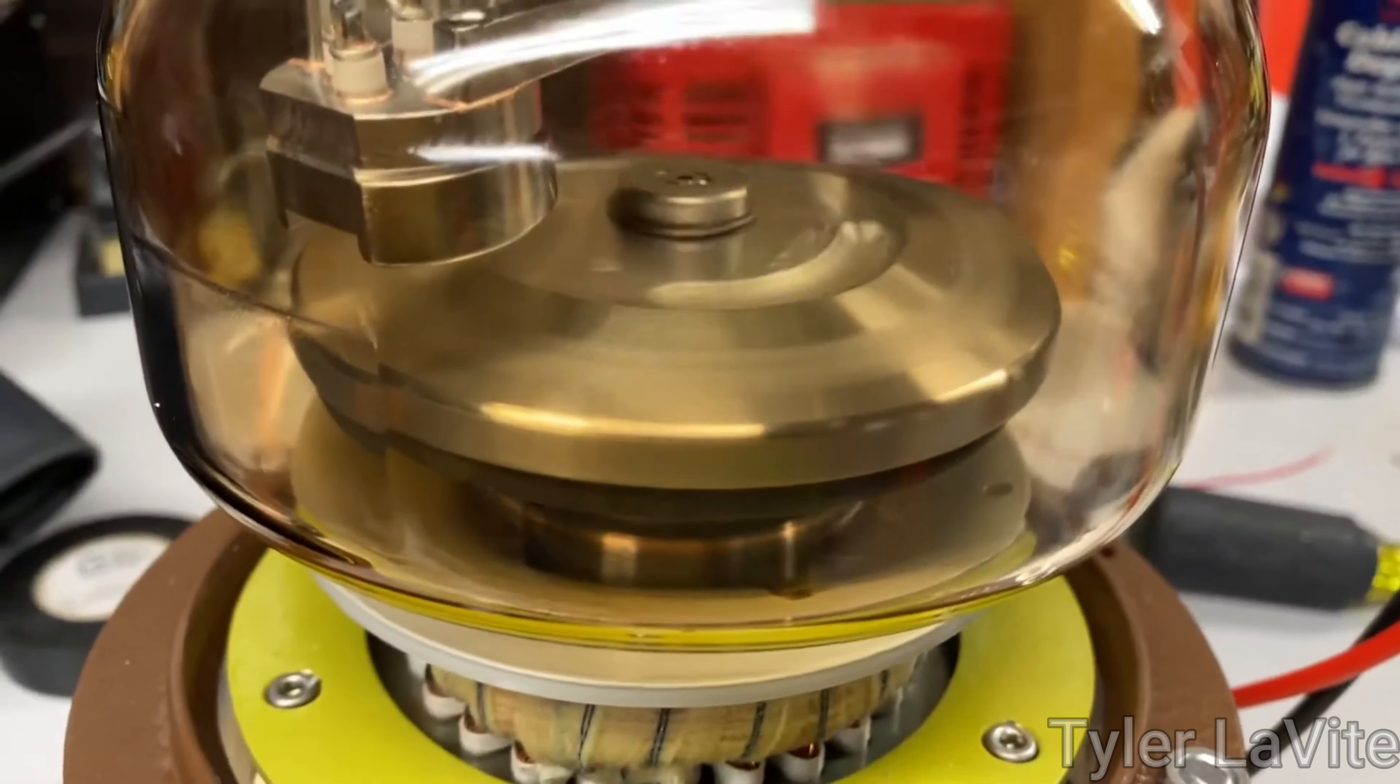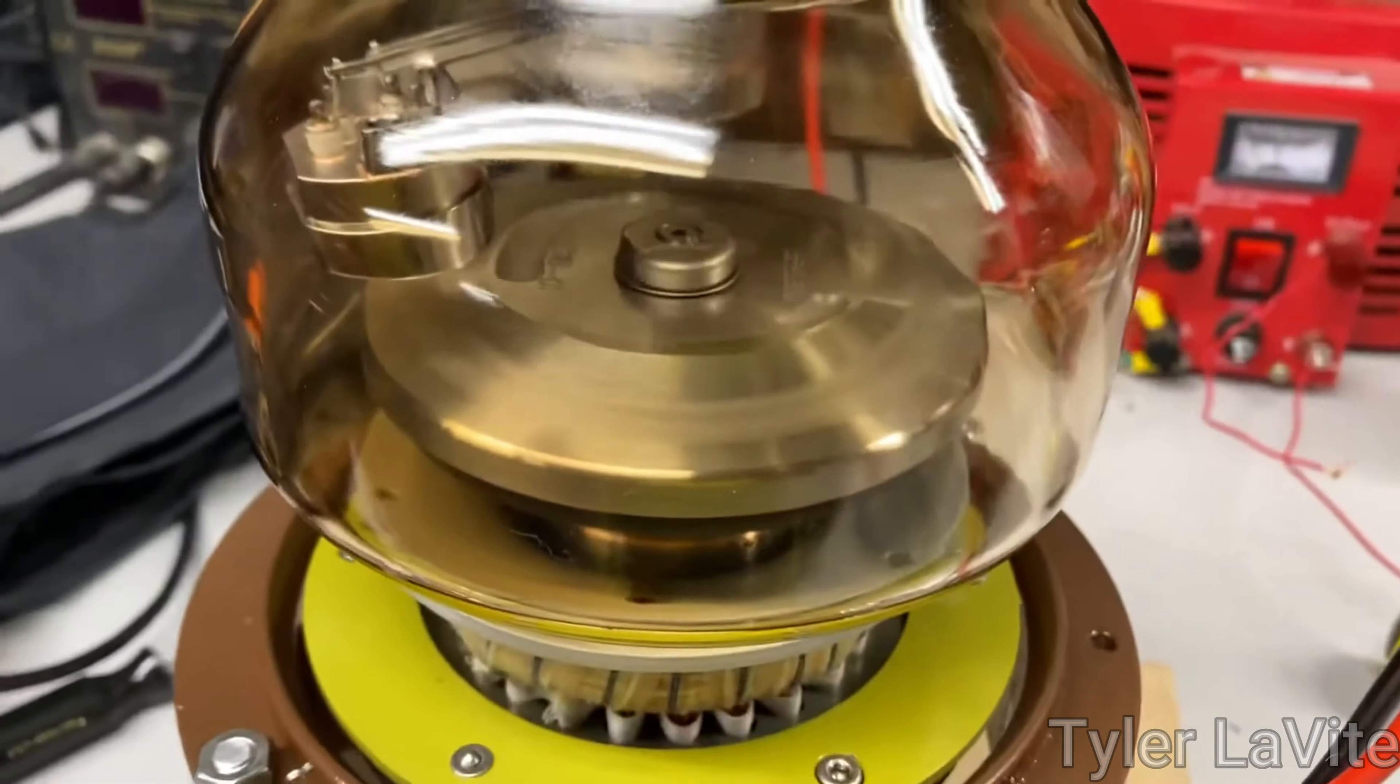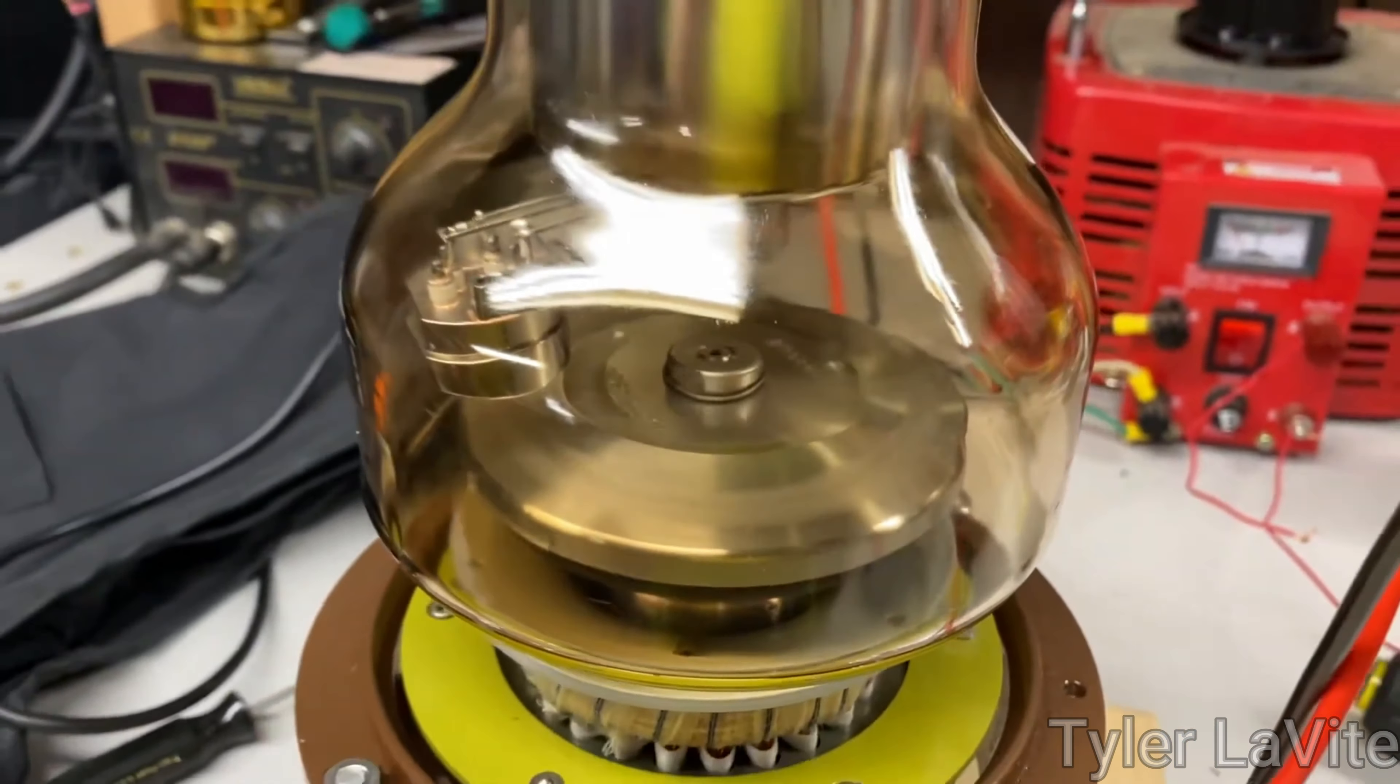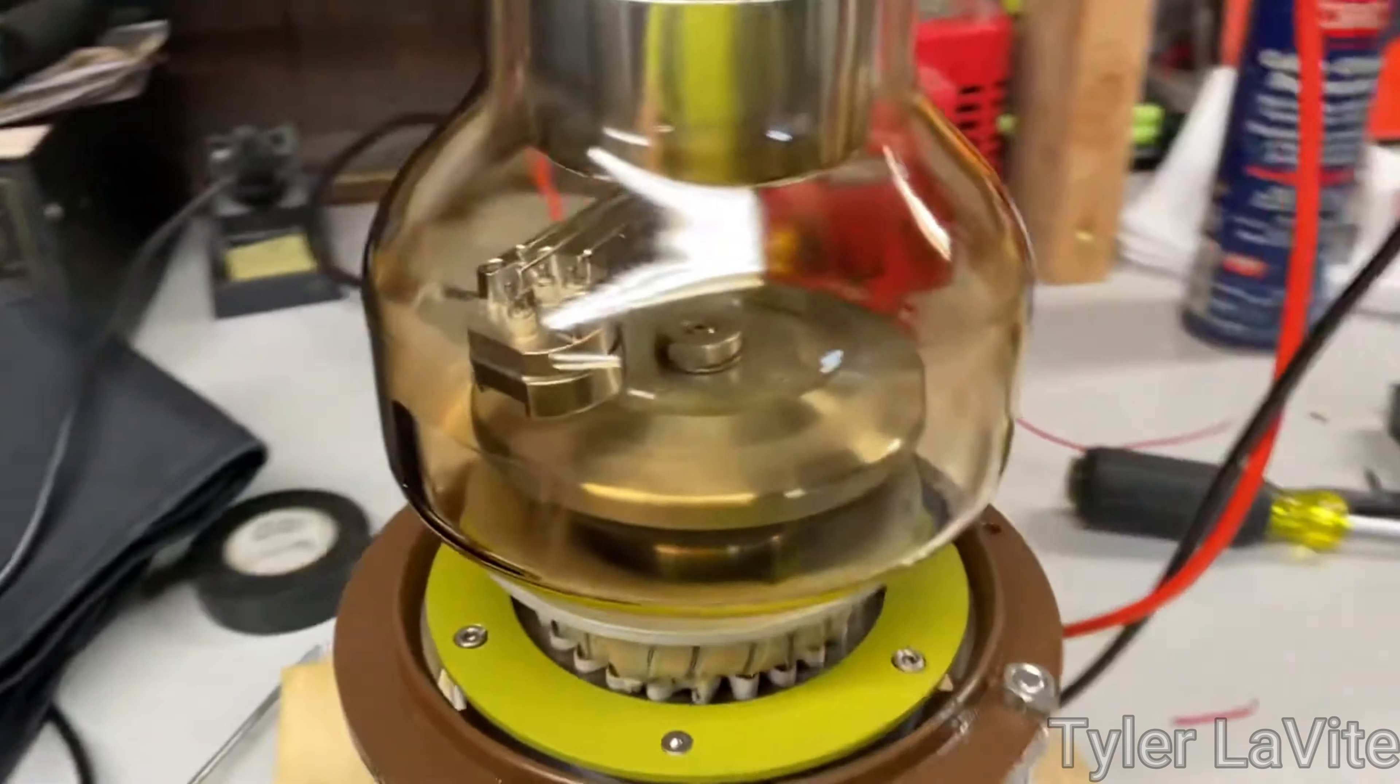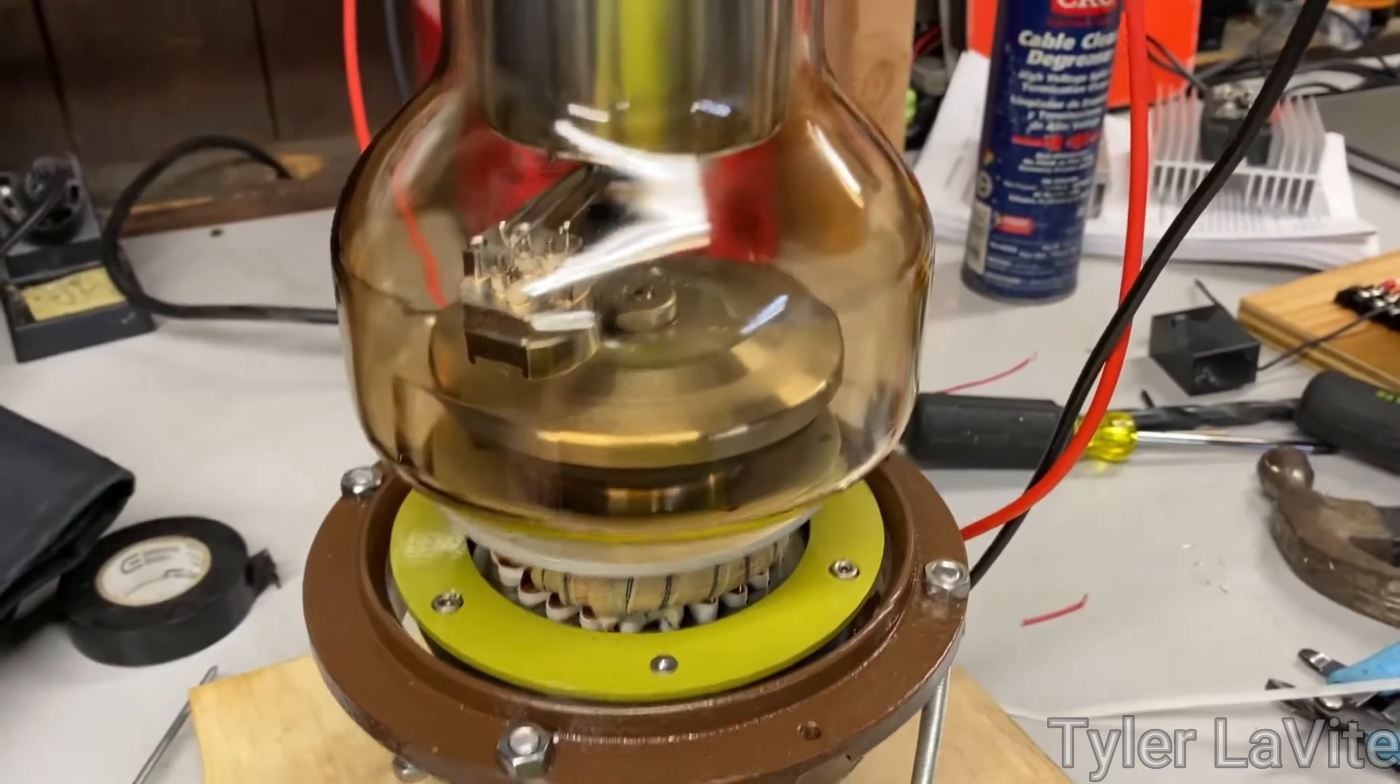Rotating anode tubes have, as the name suggests, an anode that can rotate. The whole thing is basically an induction motor. The shaft can be under vacuum inside the tube without the need for electrical vacuum feed-throughs. The anode is rotated by a stator located around the bottom of the tube. This spreads the heat generation and wear of the anode over a larger area.